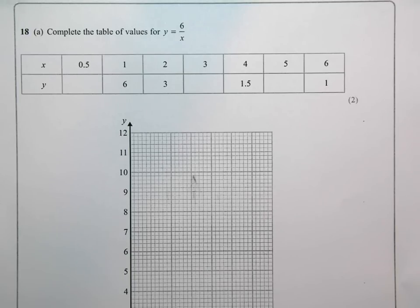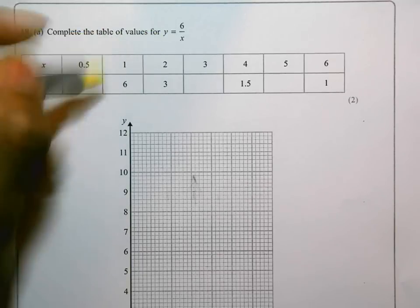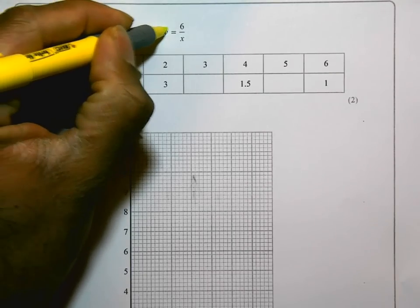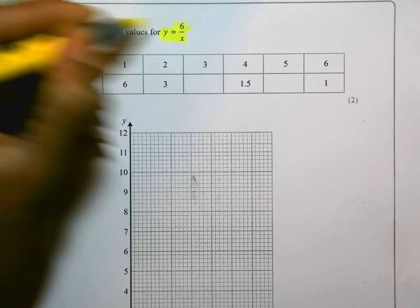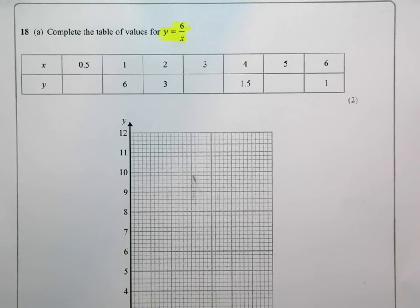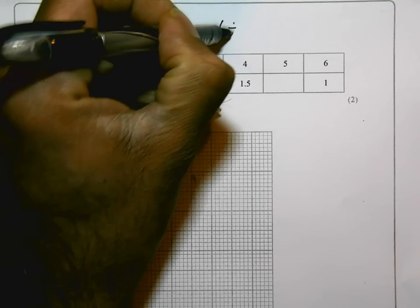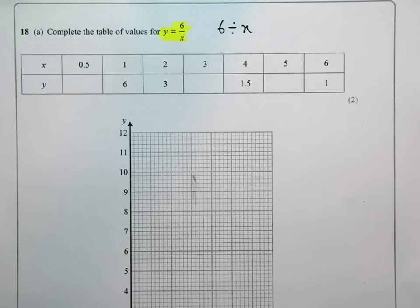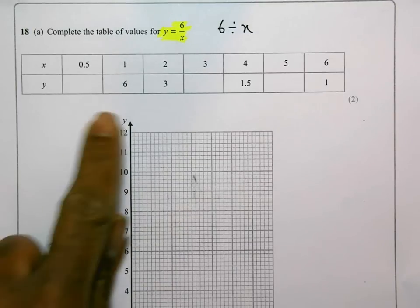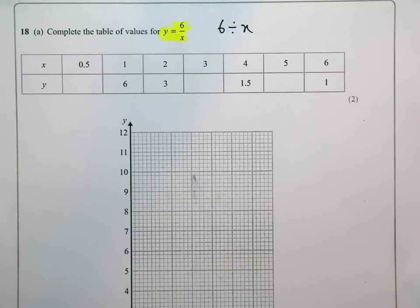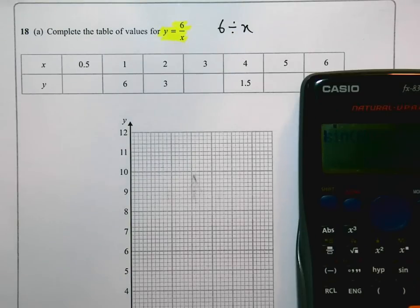This is question number 18 on the higher calculator paper. Reading through the question, it says copy and complete the table of values for y is equal to 6 over x. That means 6 divided by x. I'm going to write that other side here. That means 6 divided by whatever x is. So they want us to complete this table. There are several values already completed. So I'm going to use my calculator for this. It's not essential because a lot of these fractions you should possibly know, but I'm going to use it nonetheless.